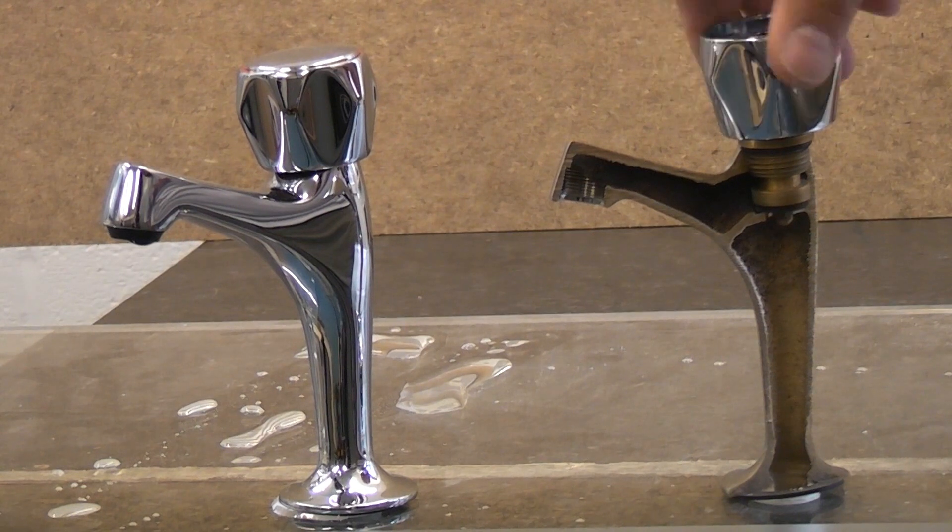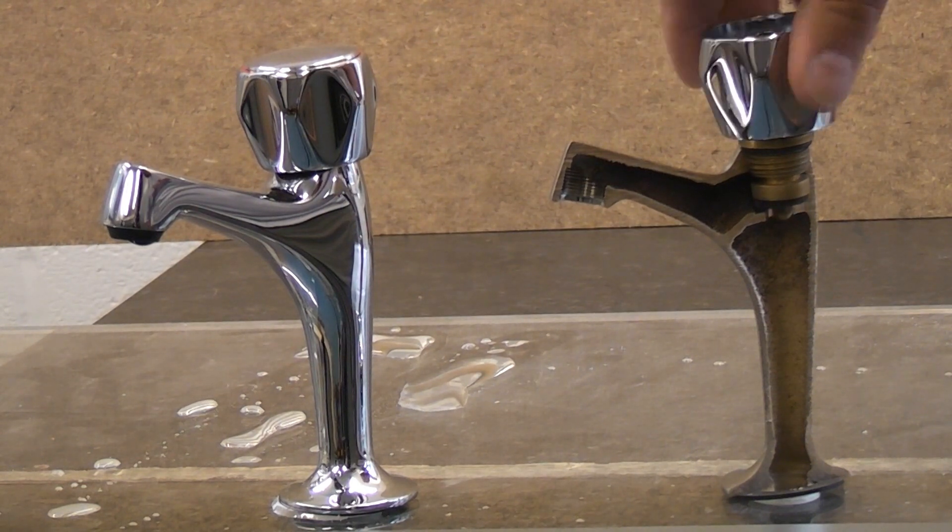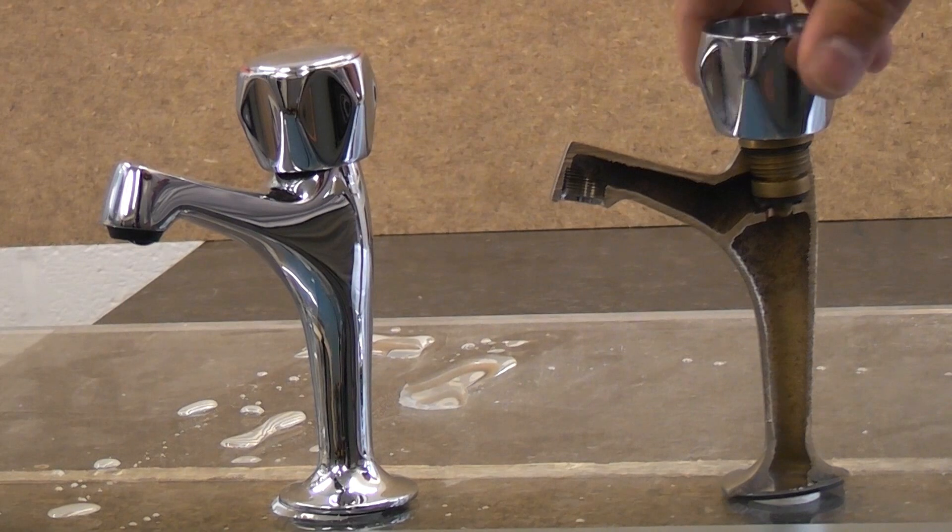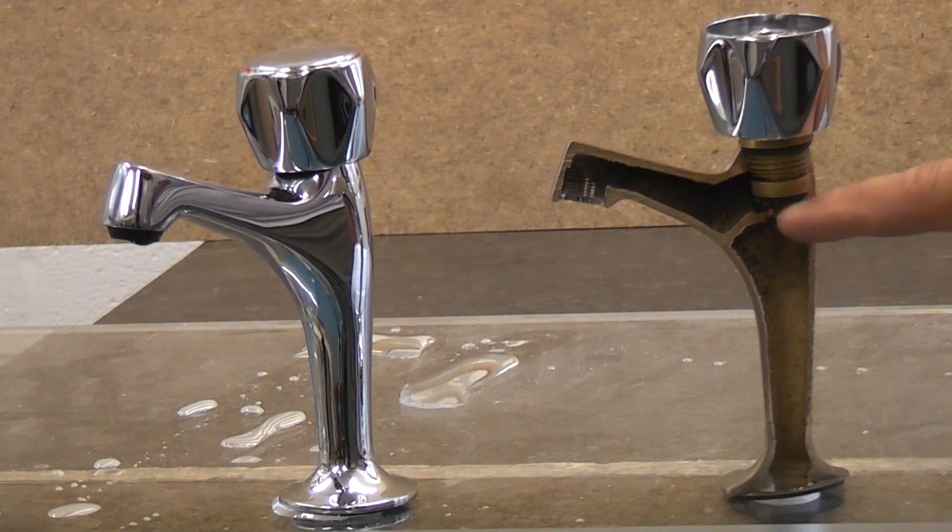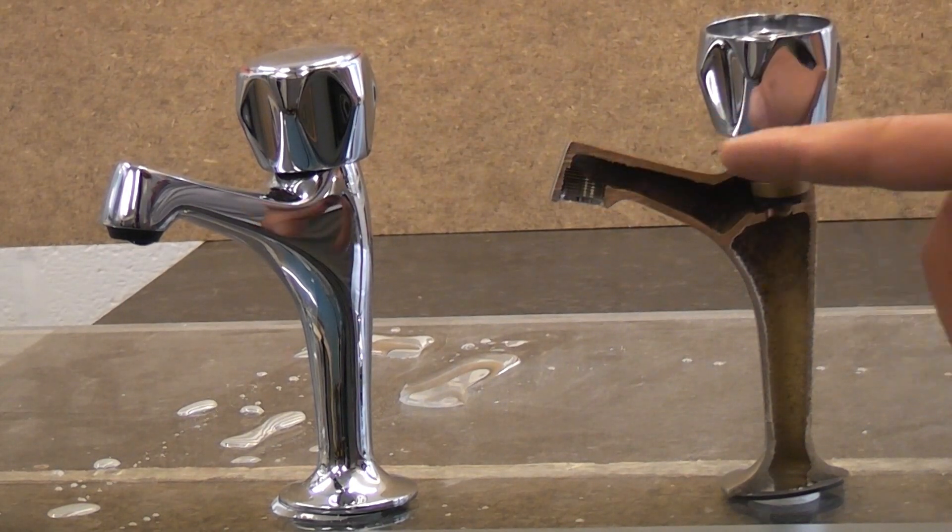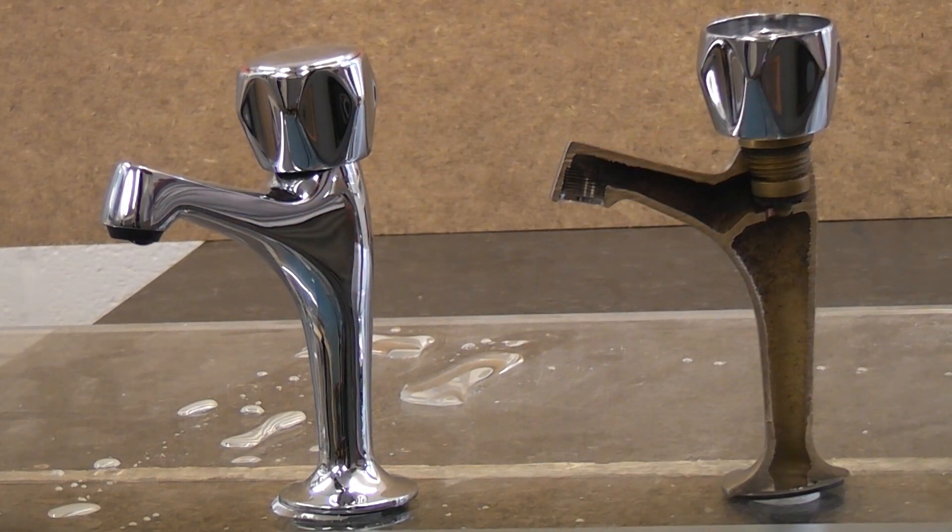Once you turn the handle, the mechanical advantage of the screw lifts the washer off the seat, allowing the water to flow through. It then flows out of the spout and into the bowl.